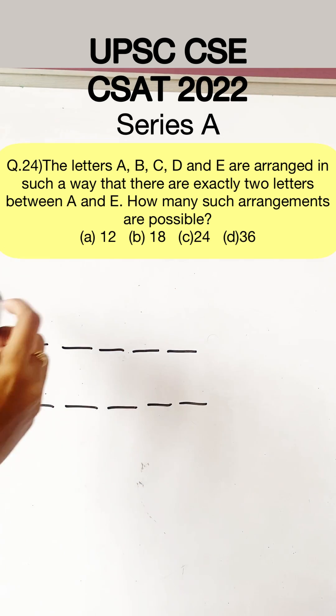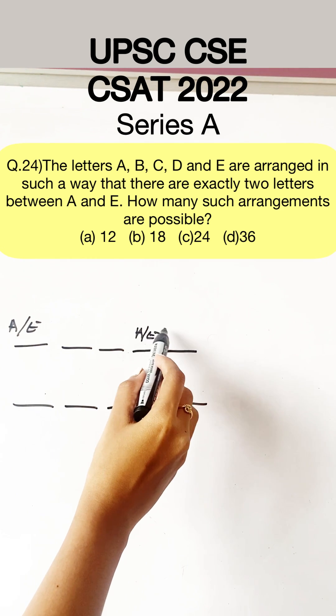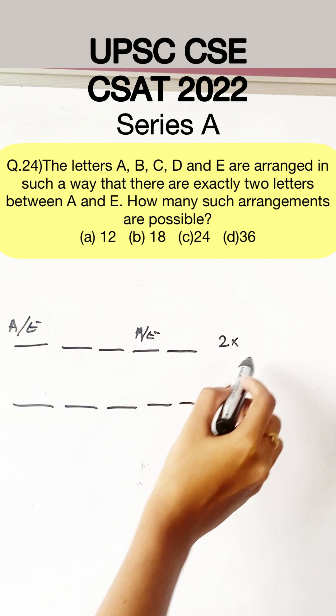Let's say A or E occupies this position. Now, the next position should be occupied by A or E right here. So there are two possibilities just with this.